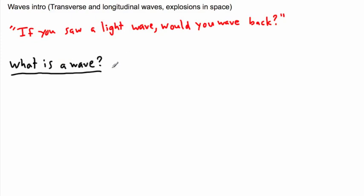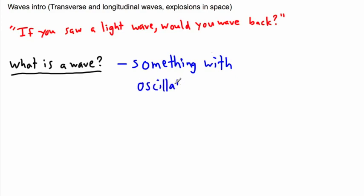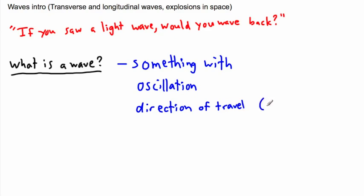So what is a wave? There are lots of different ways of defining it, but I'd like to define it as something with the following two features: something with an oscillation — remember an oscillation just means something moving back and forth — and something that has a direction of travel. And very often this is called the direction of energy transfer, because energy can be transferred from one place to another. So a wave is something that has oscillation and has a direction of travel.